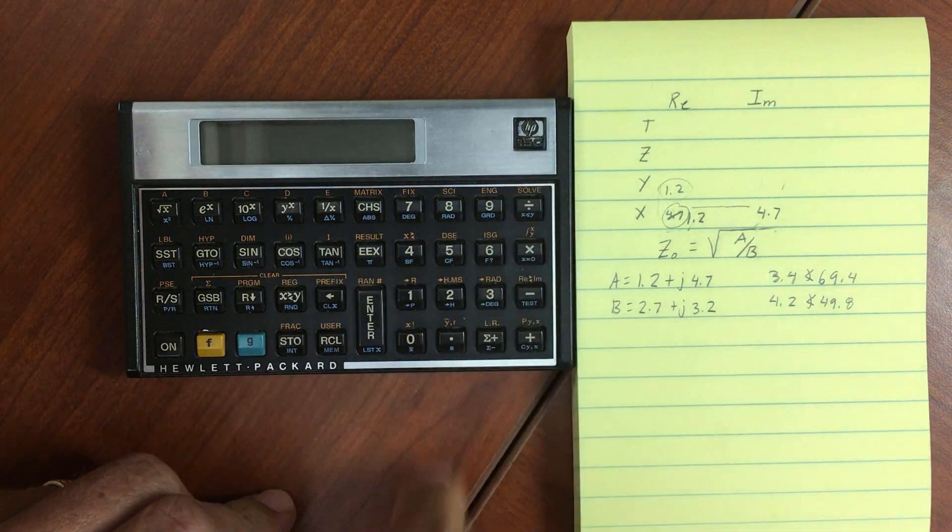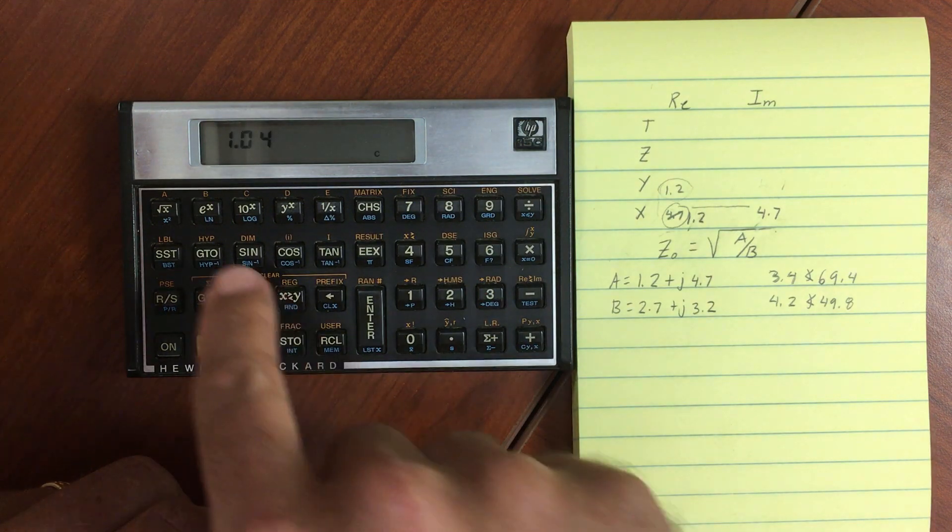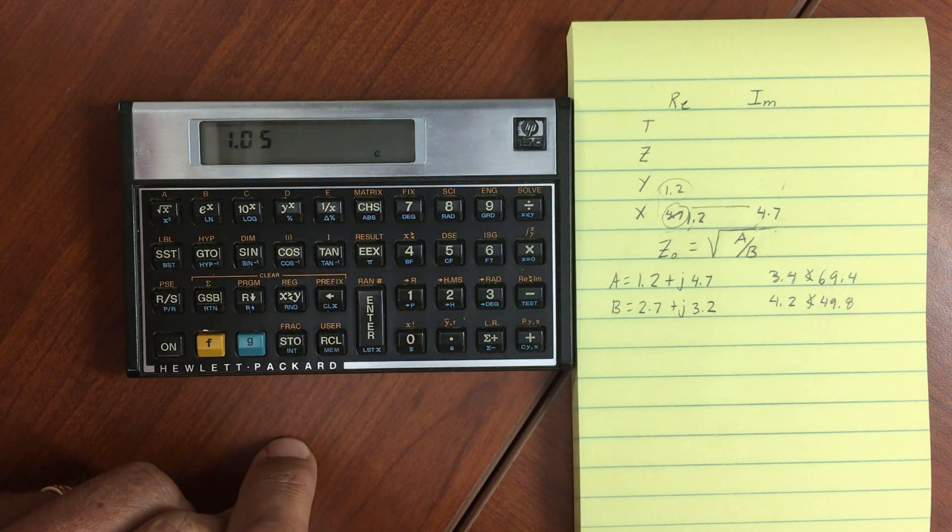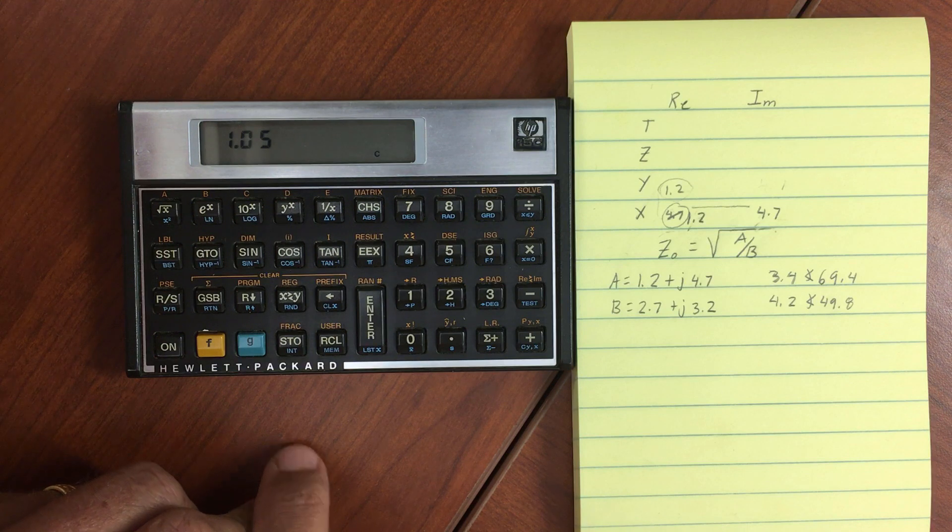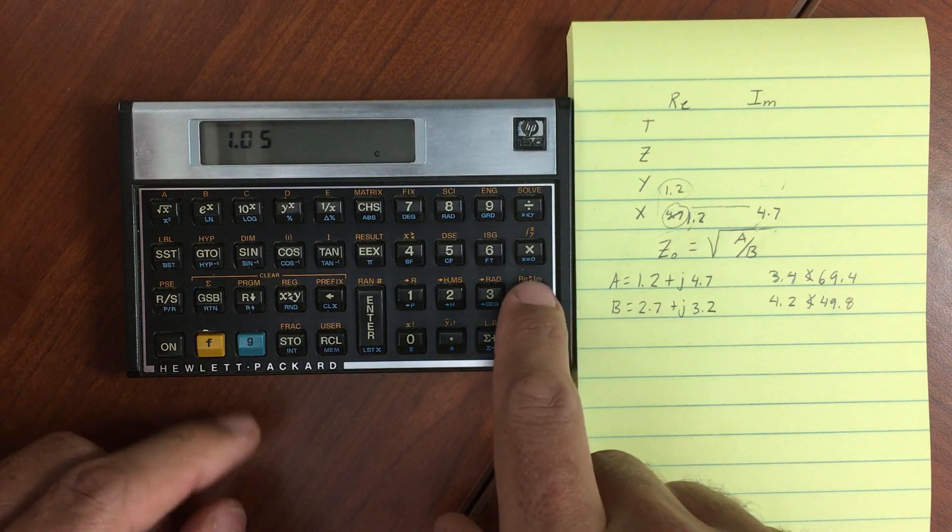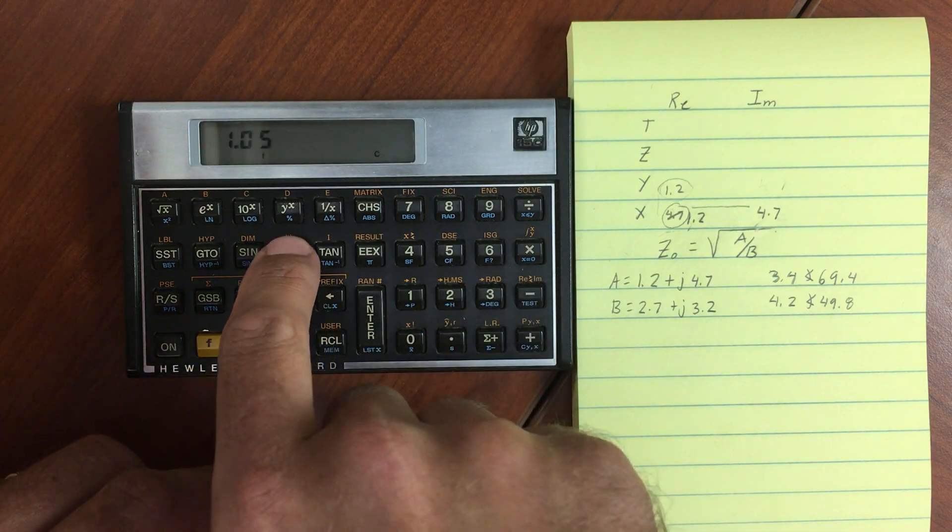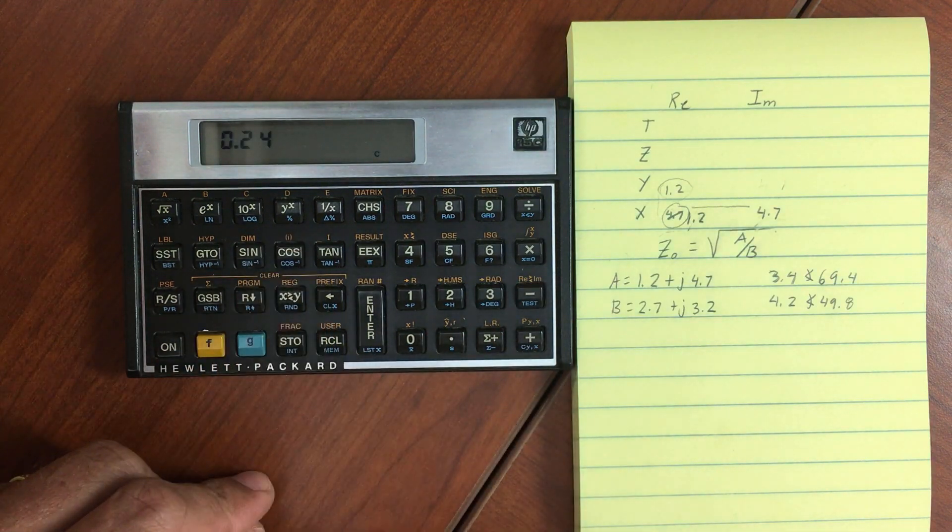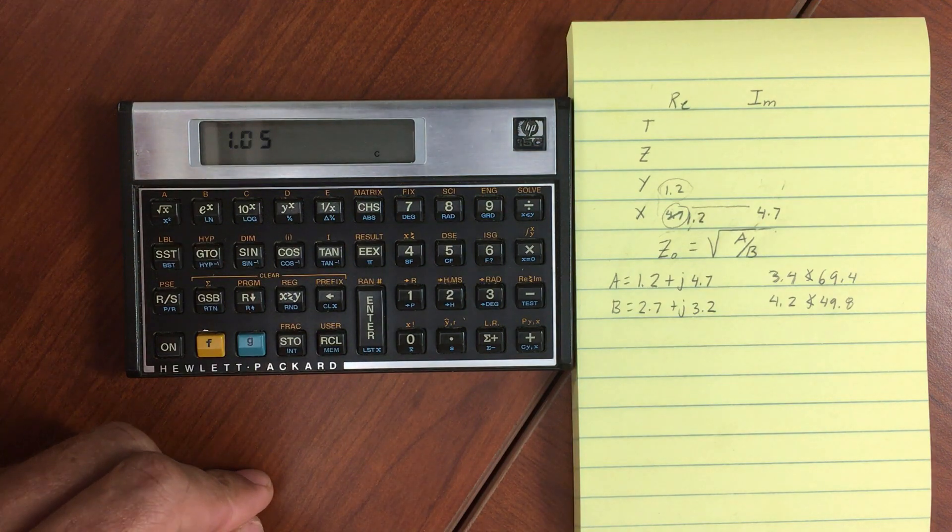Now let's divide them and take the square root. So the answer should be approximately 1.05 plus j 0.24. And if I look at my imaginary portion, I have 0.24. So it looks like we performed the operation correctly.